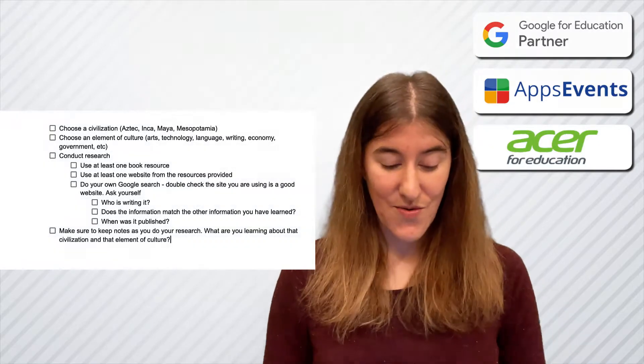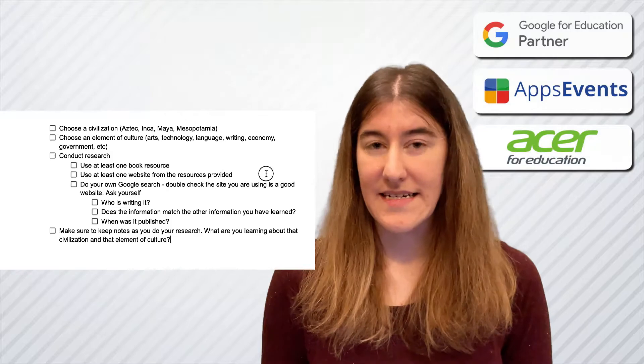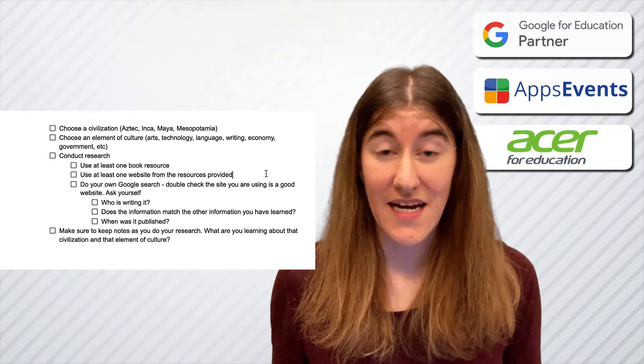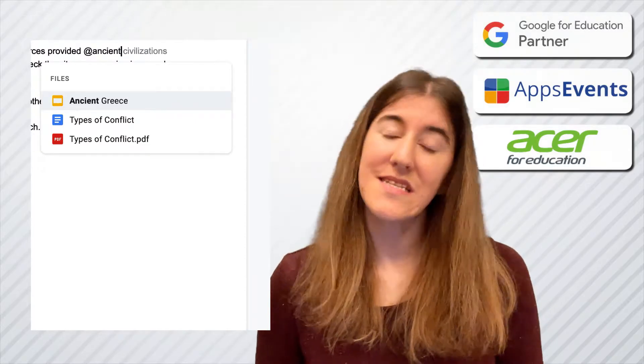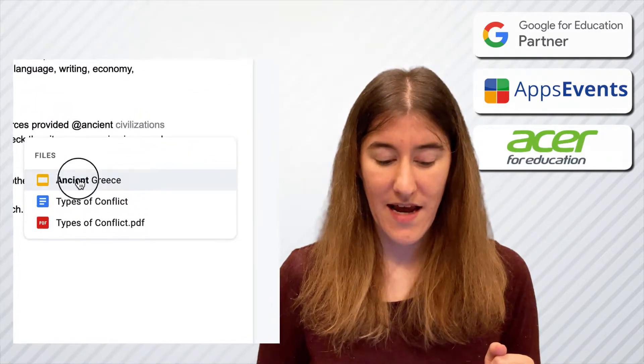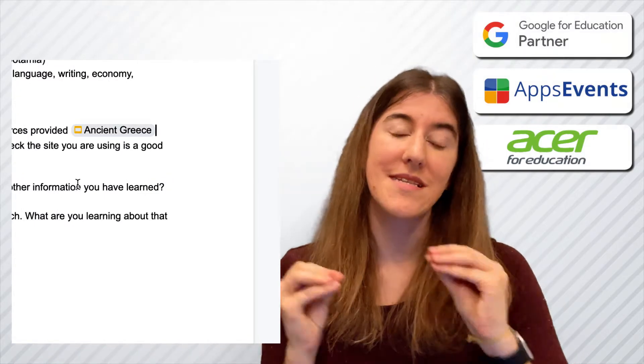The first thing you can do is pull multiple documents and link them directly into your working document. All you have to do is start typing. Here in my document I've got a statement that says 'use at least one link from the resources provided.' I can connect the resources right here. I start typing and you'll notice what pops up is people, files, and dates. I know the name of my file so I start typing it and the files listed change to reflect any that have that word in there. I click 'Ancient Greece' and it puts that link directly in there.